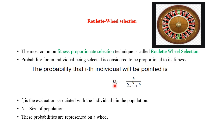The probability of the i-th individual is equal to the fitness of the i-th individual divided by the total of all fitness values. This division normalizes the values. F(i) is the fitness evaluation associated with individual i in the population, and N is the size of the population. These probabilities are represented on a wheel.